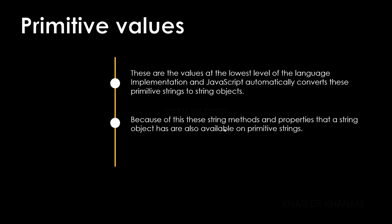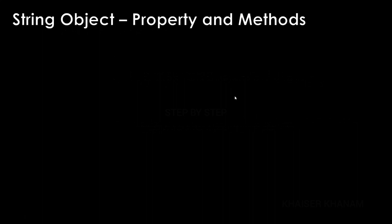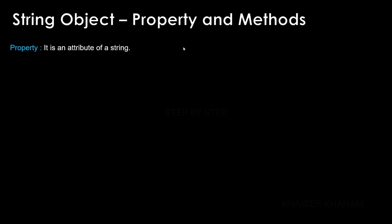You don't have to worry about what properties and methods are — we are going to see them now. Inside the string object we have properties and methods. A property is an attribute of a string, and a method is a way to perform certain operations on a string — such as getting part of a string, reversing it, or merging strings.